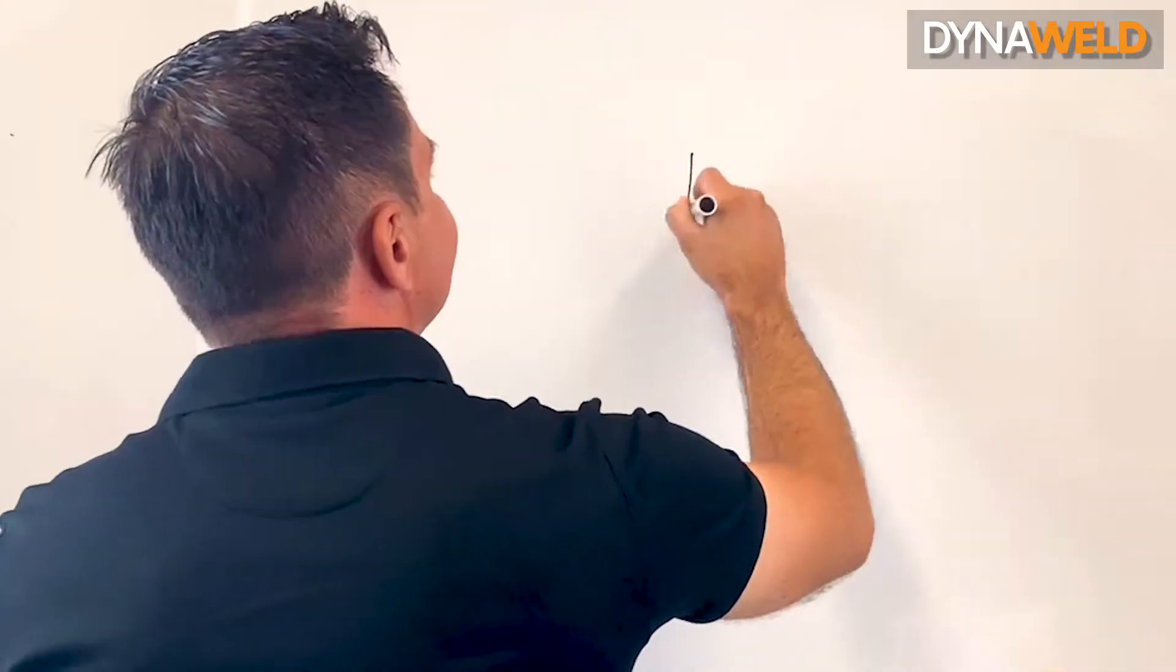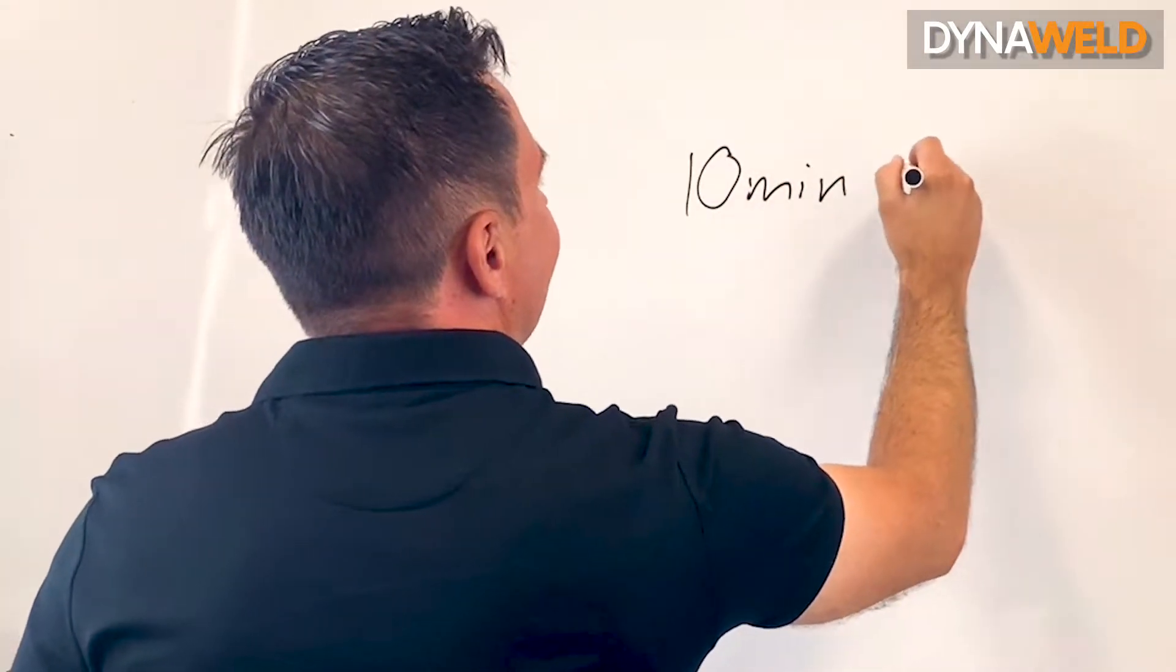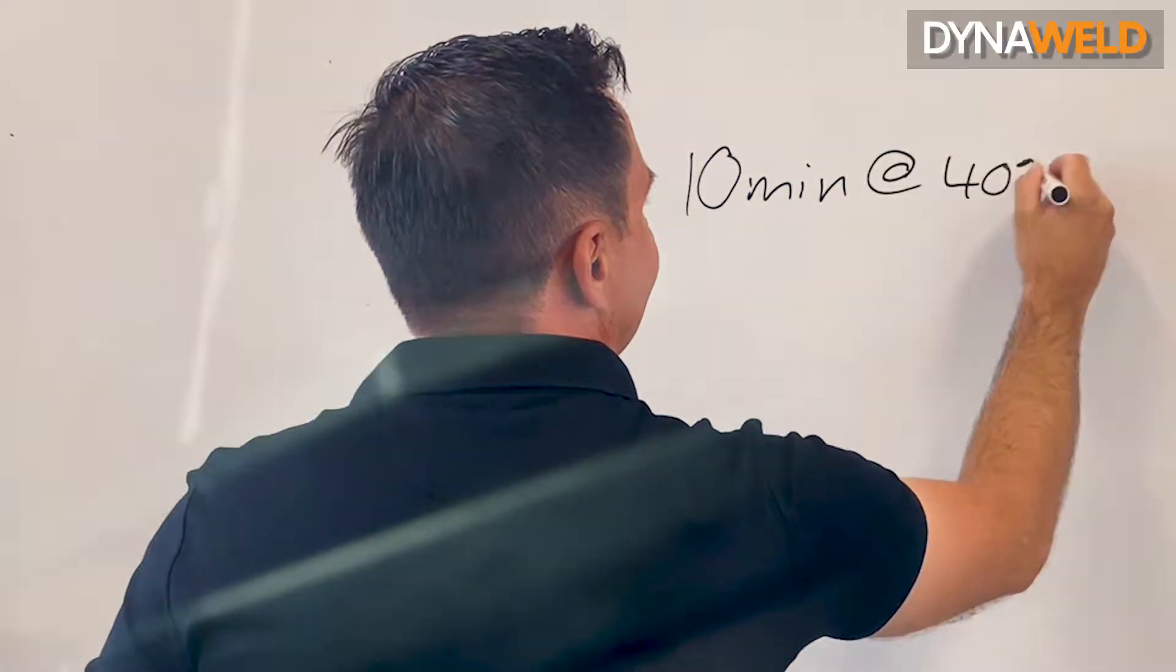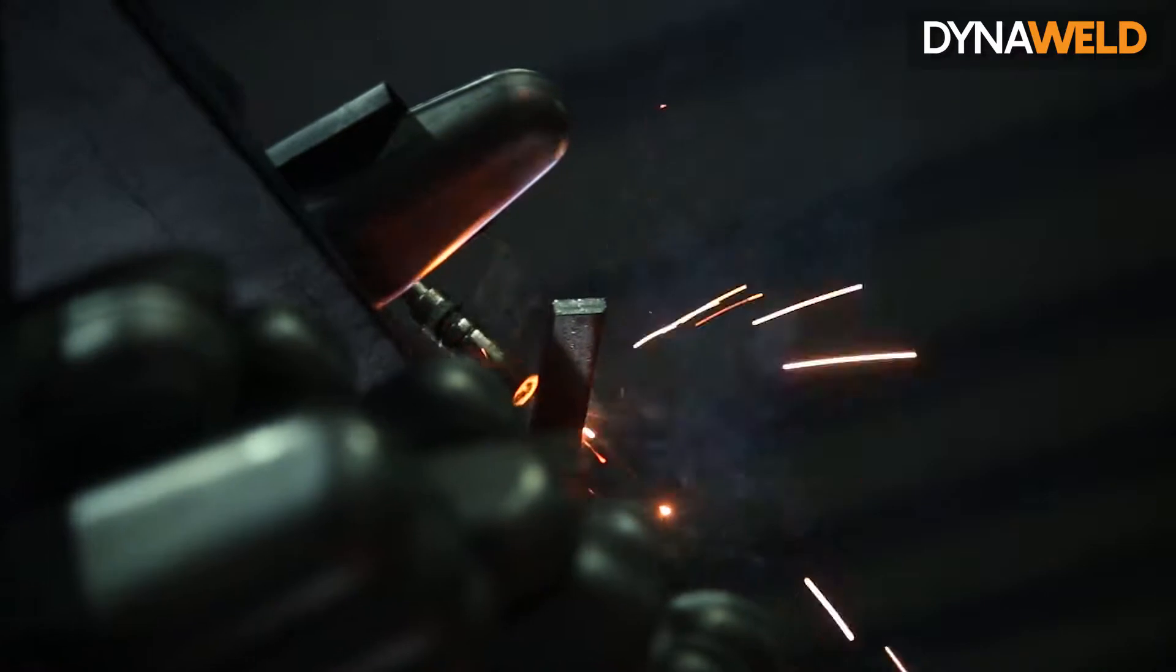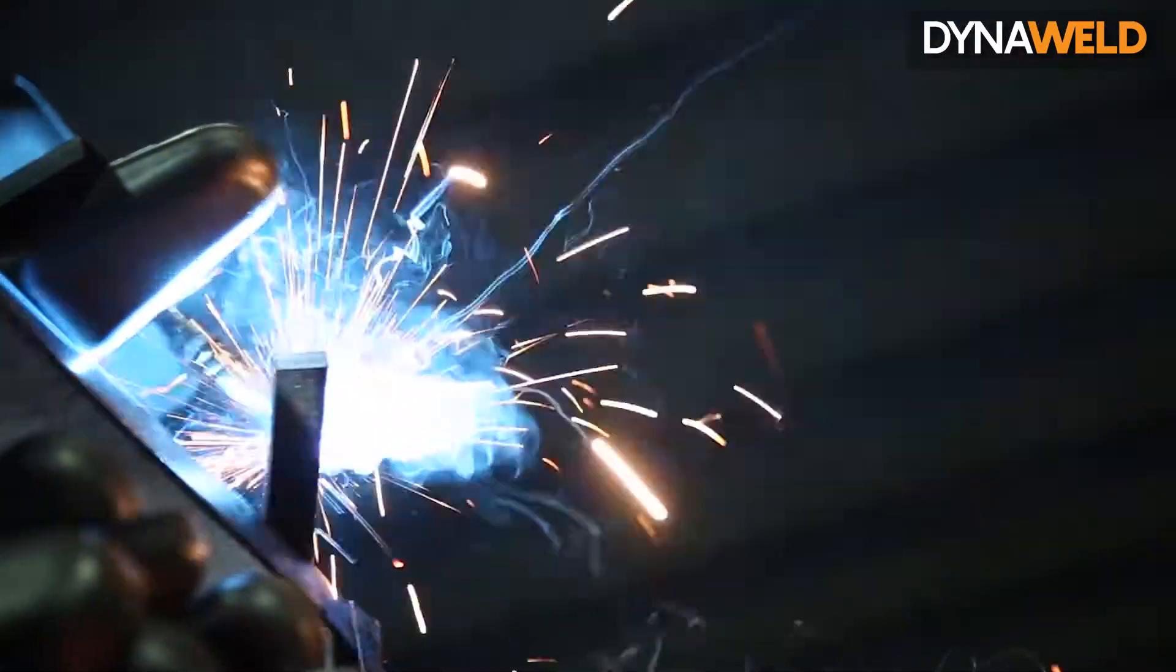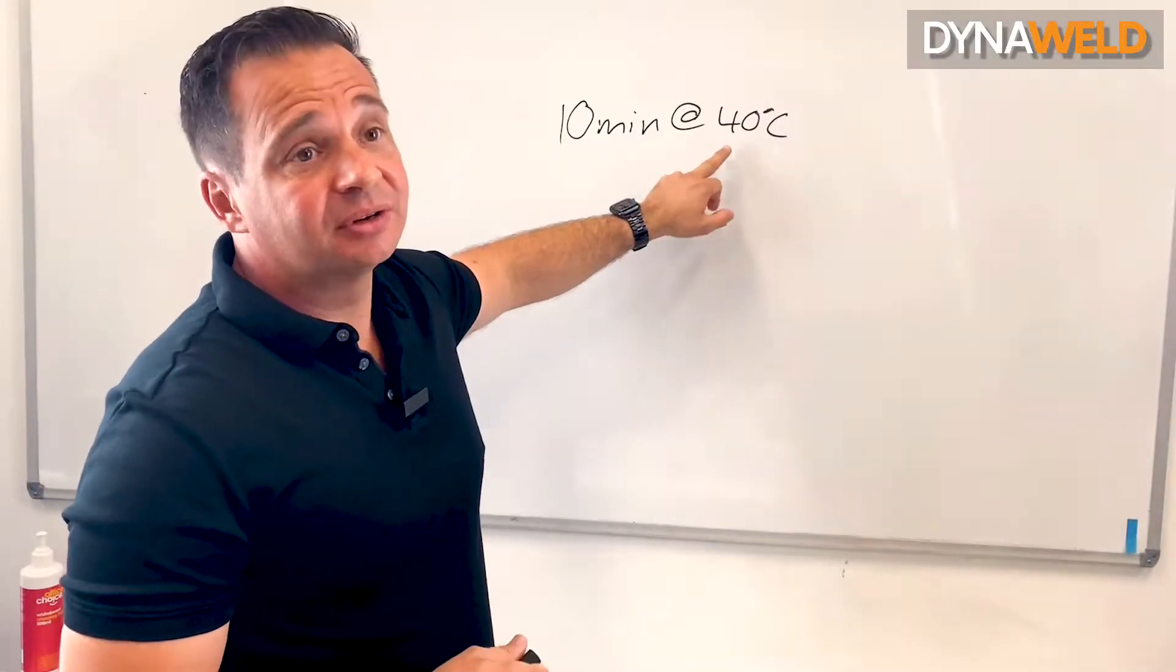The Australian standard calls for a 10-minute at 40 degrees. It's a measurement of the machine's performance over a 10-minute period calculated at 40 degrees centigrade.